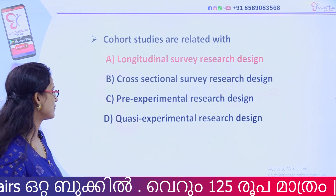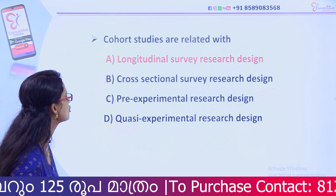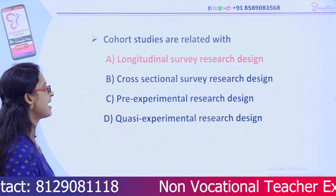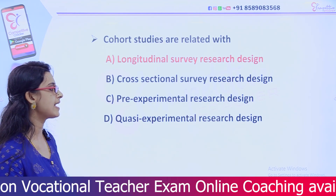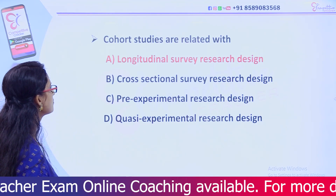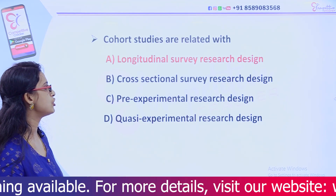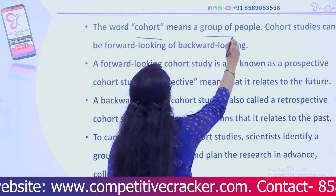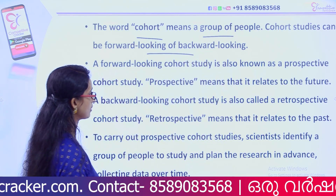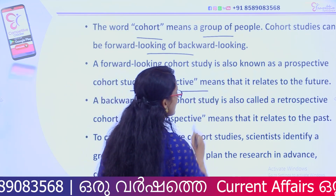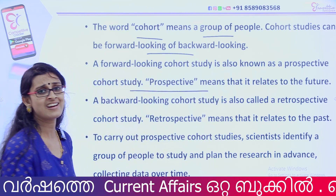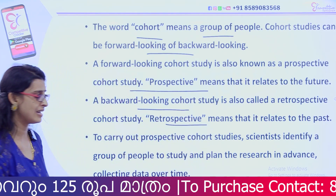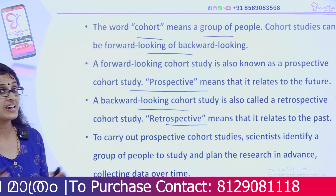Cohort studies are related with: Option A, Longitudinal survey research design; Option B, Cross-sectional survey research design; Option C, Pre-experimental research design; Option D, Quasi-experimental research design. The right answer is Option A, Longitudinal survey research design. Cohort means a group of people. Studies can be forward-looking (prospective) or backward-looking (retrospective).